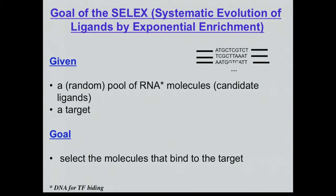The goal of the SELEX experiment, as was initially designed — the Systematic Evolution of Ligands by Exponential Enrichment — is starting with a random pool, and initially that random pool was of RNA molecules that will be a candidate ligand for a target. Our goal is to select from this pool the molecules that bind to the target. For most of the transcription factor studies, this has been replaced by double-stranded DNA. The random pool is not fully random in the sense that there is a randomized region flanked on both sides by constant sequences used for amplification and other steps.